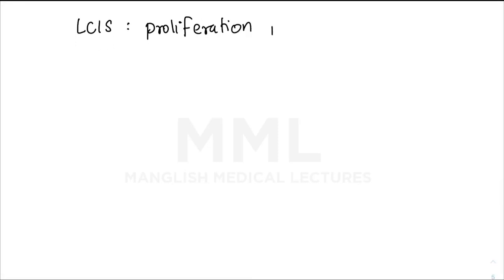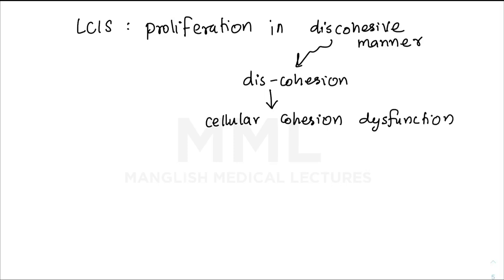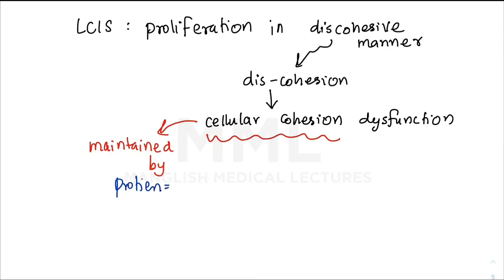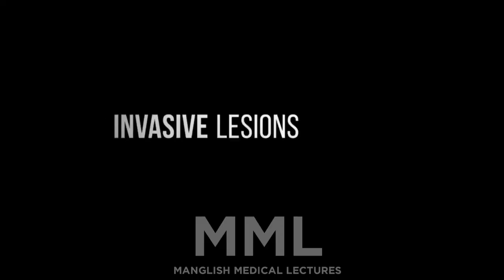Now let's discuss LCIS — lobular carcinoma in-situ. In LCIS, proliferation occurs in a discohesive manner because cellular cohesion is dysfunctional. E-cadherin, the protein maintaining cellular cohesion, is lost. LCIS is most often an incidental finding and there is no calcification in LCIS.